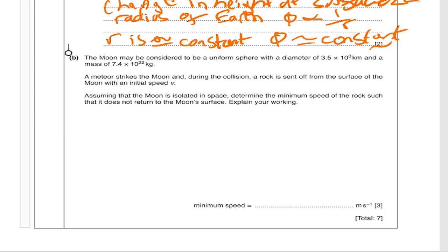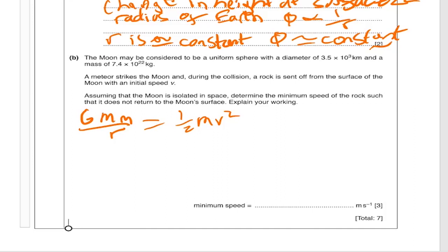For escape velocity, we need two things: the initial kinetic energy and the potential energy at that point. The gravitational potential energy GMm over R equals the initial kinetic energy, which is a half mV squared. Potential energy is always negative, but we don't need to deal with the negative part because we're only dealing with the amount of potential energy changing into kinetic energy. Rearranging gives us 2GM over R equals V squared.